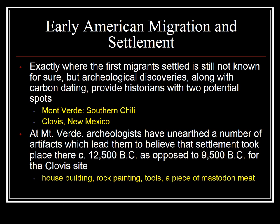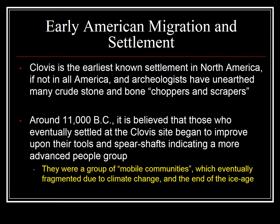The dating is fairly exact but not a totally exact science, which is why there's still debate. Some of the artifacts found at Monte Verde include pieces of petrified mastodon meat, crude stone tools, rock paintings, and house structures. At Clovis, archaeologists have unearthed many crude stone and bone choppers or scrapers. Around 11,000 BC, those who settled at the Clovis site began to improve upon their tools and spear shafts, indicating a more advanced people group — described as mobile communities that eventually fragmented due to climate change, largely from the end of the Ice Age.